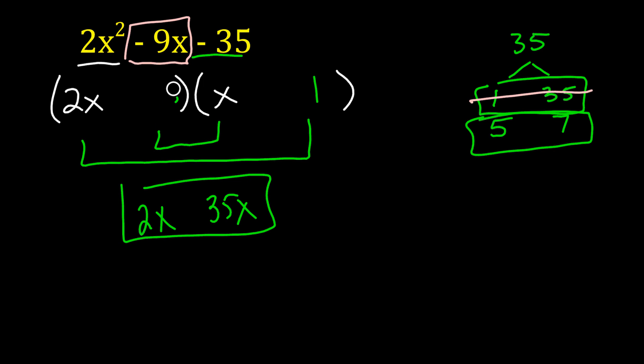So it's got to be 5 and 7. I don't know which one goes where. So I'm just going to put 5 in the first box and 7 in the second one. So 2x times 7 is 14x. And 5 times x is 5x. Could I make these two give me negative 9x? Sure. I could do negative 14x and plus 5x.